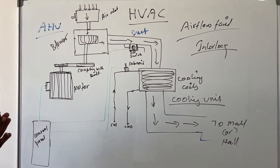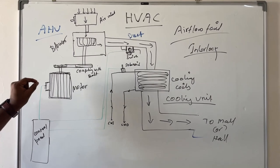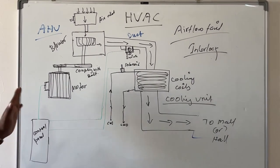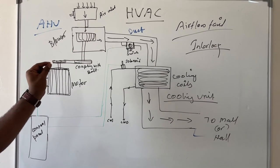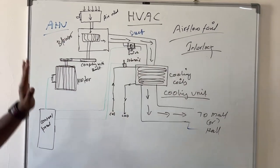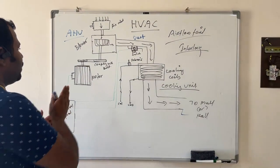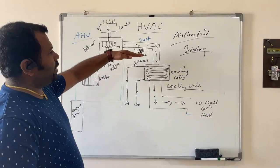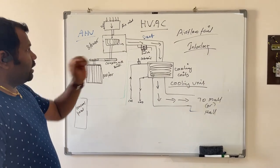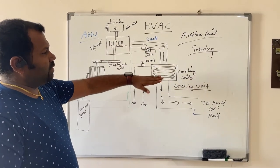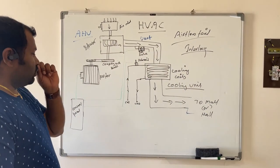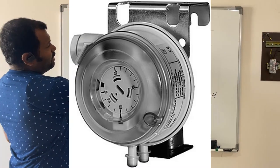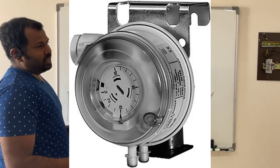An electrical signal is taken from the electrical circuit of this motor. But as mentioned, when there is a belt cut or any mechanical failure, we won't know whether the blower is working or not. So we need to monitor the airflow directly, because if the airflow is not there, there will be a problem in the cooling system.